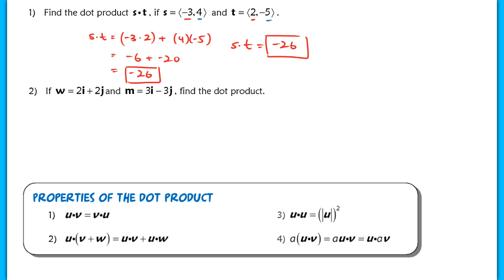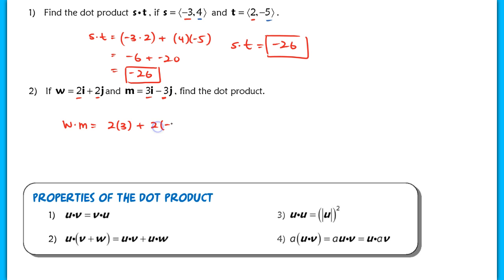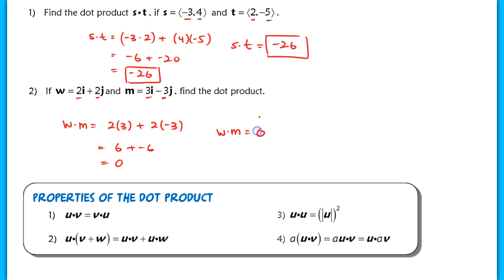In example 2, we're using ij notation, but it doesn't change how you do the problem. The horizontal component is 2 and 3, and the vertical components are 2 and -3, so w·m = 2(3) + 2(-3) = 6 + (-6) = 0. This dot product of 0 is actually a special case, which we'll get to on the back side of our notes.